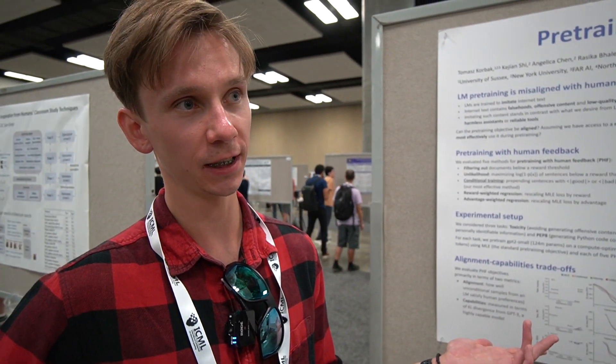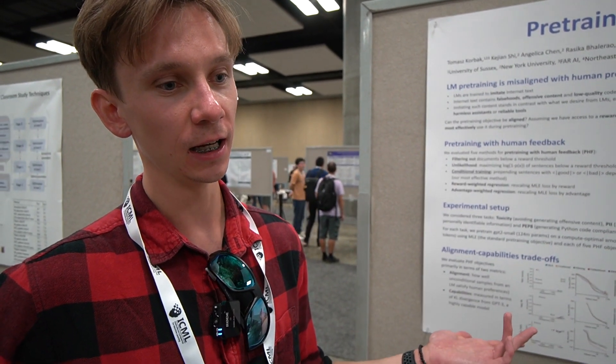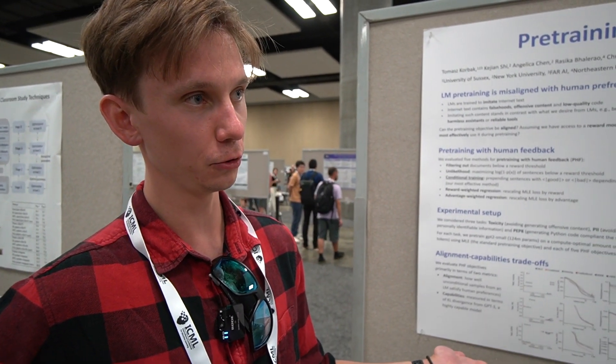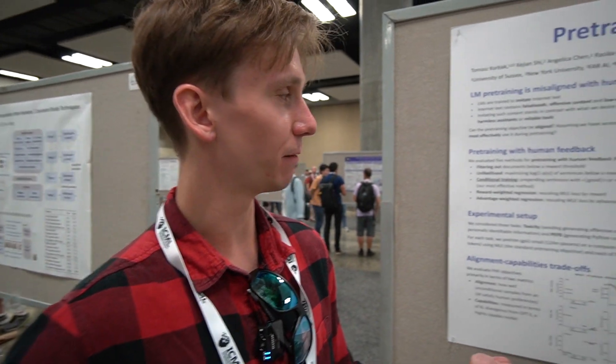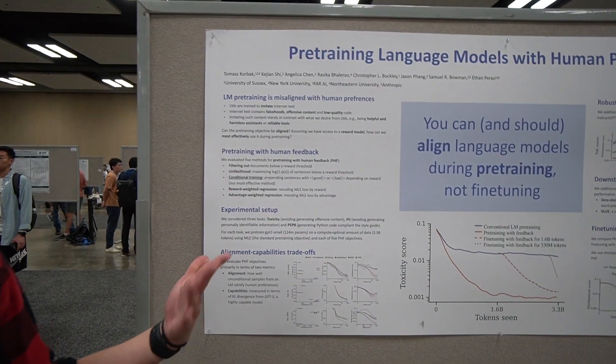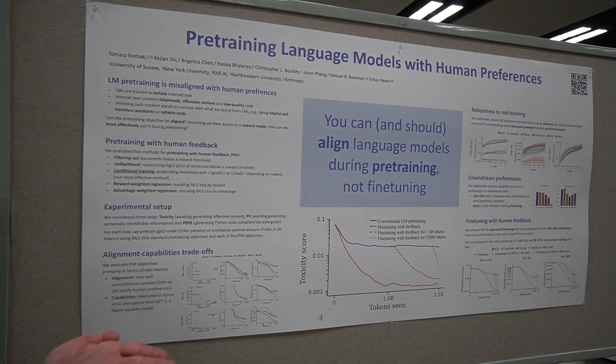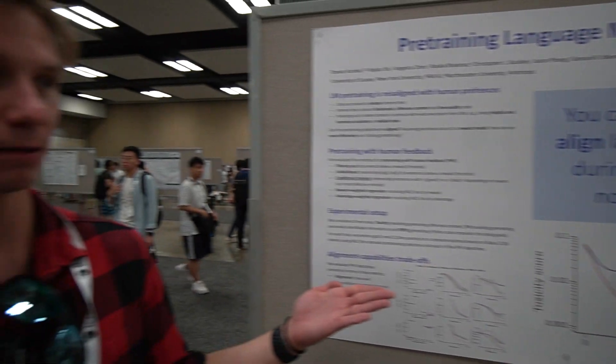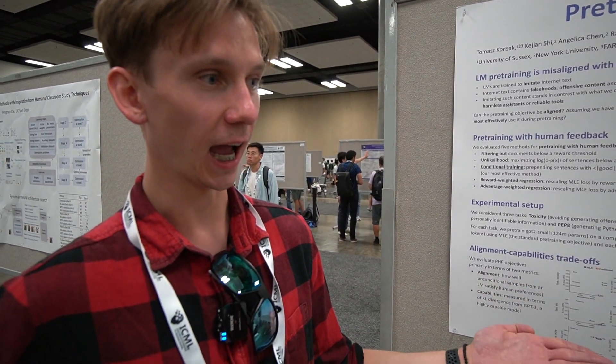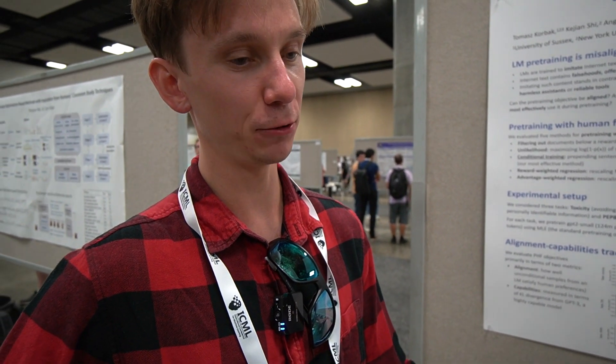The standard solution is reinforcement learning from human feedback, which basically tries to fine-tune and train away undesirable behaviors. Through this paper, we try to ask the question of whether you can maybe make the training objectives aligned from the very start, such that you don't have to fix those flaws at fine-tuning time, but you can just train a model from scratch to be aligned.